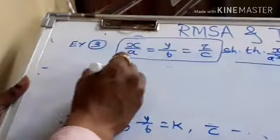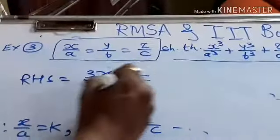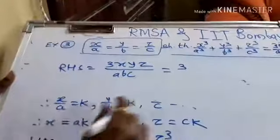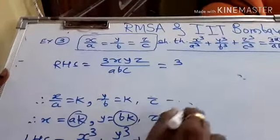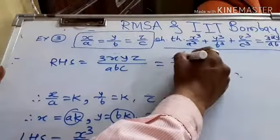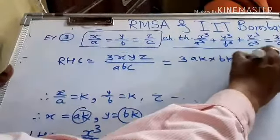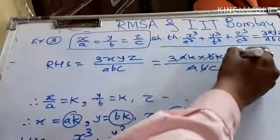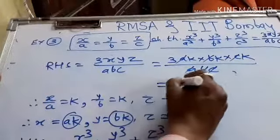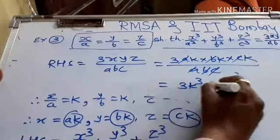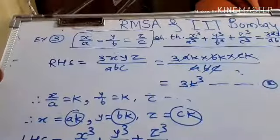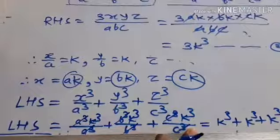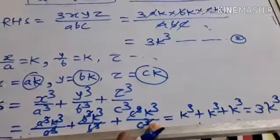Now what I have to do? I have to solve RHS. And if after solving the RHS, if I get 3 k cube, then and then we say that LHS is equal to RHS. Hence it will be proved. Now try to solve RHS. 3xyz upon abc. Again put the values of x, y and z here. So ak into bk into ck upon abc. A a gets cancelled, b b gets cancelled, c c cancel. So the answer is 3 k cube. So we can easily say that LHS is equal to RHS. And hence by using this concept we can make. So we can say from this example that number of examples covering the k method can easily be solved.